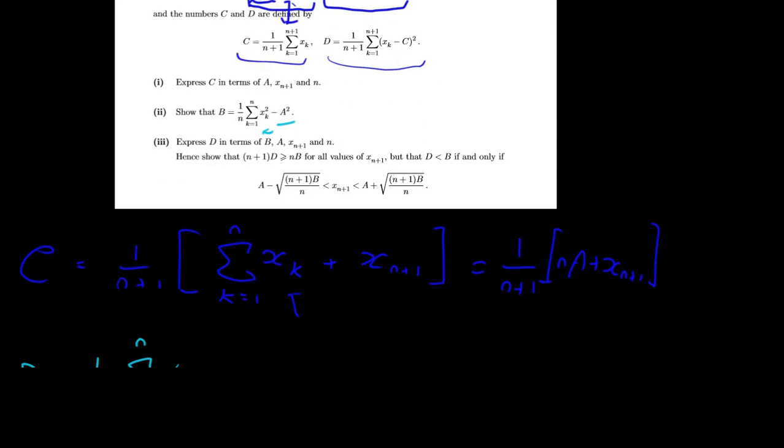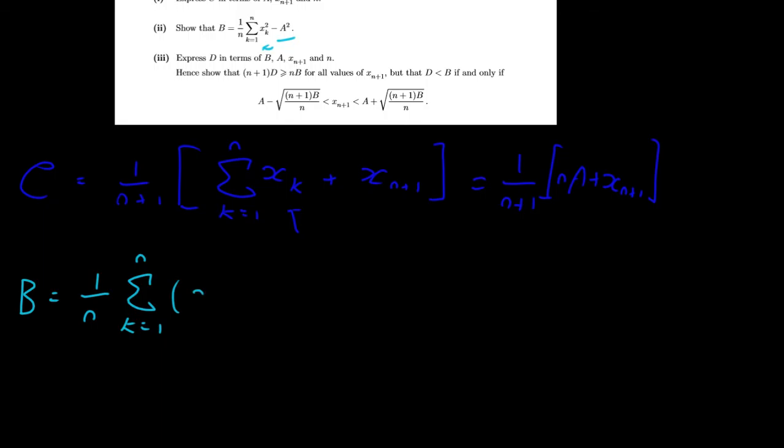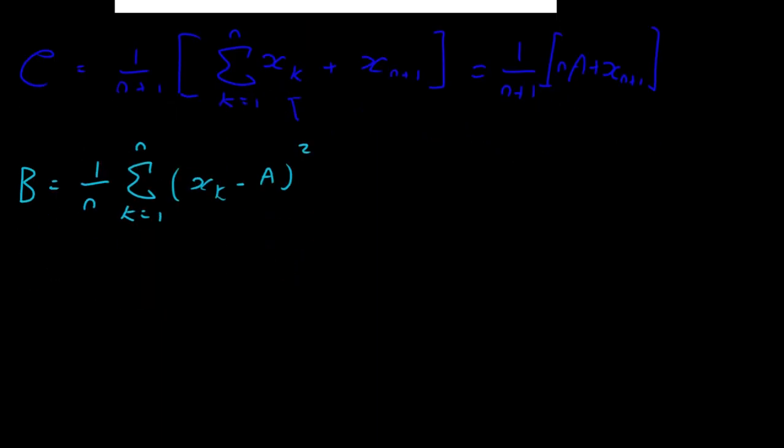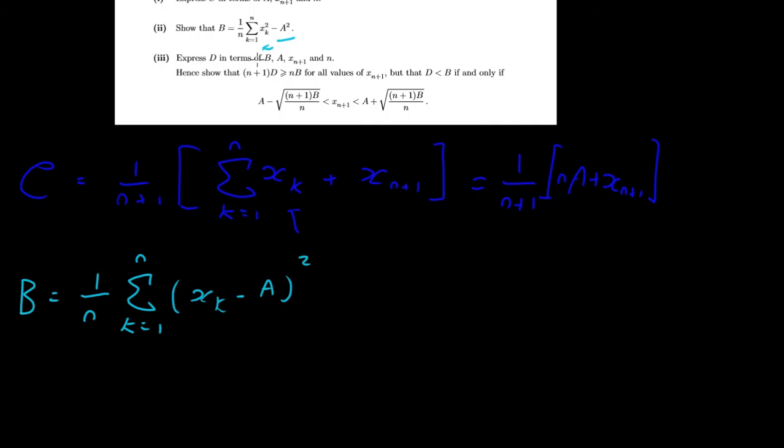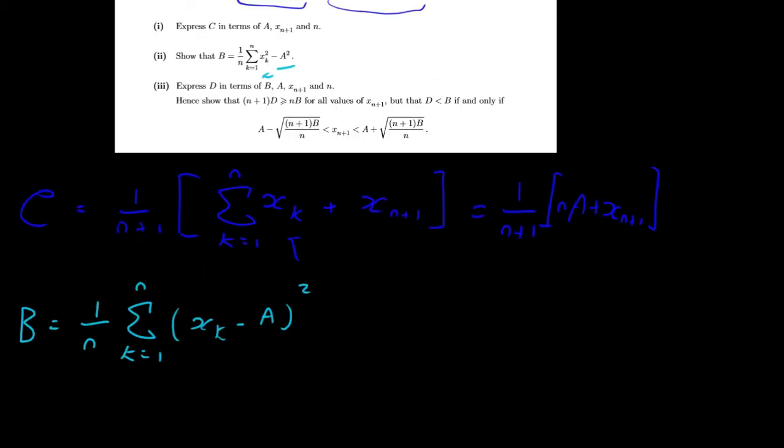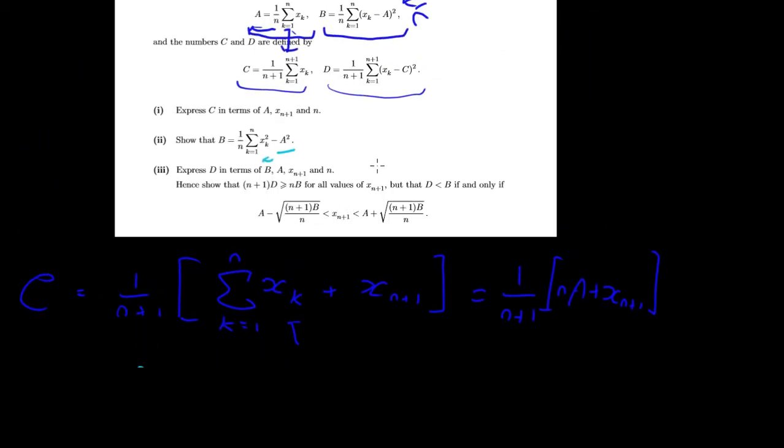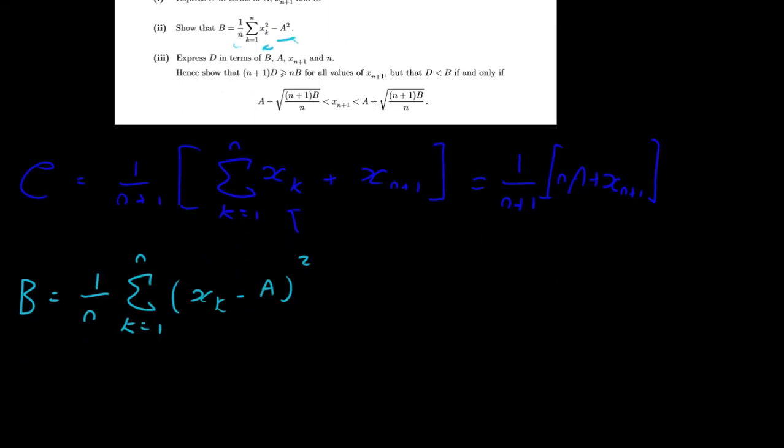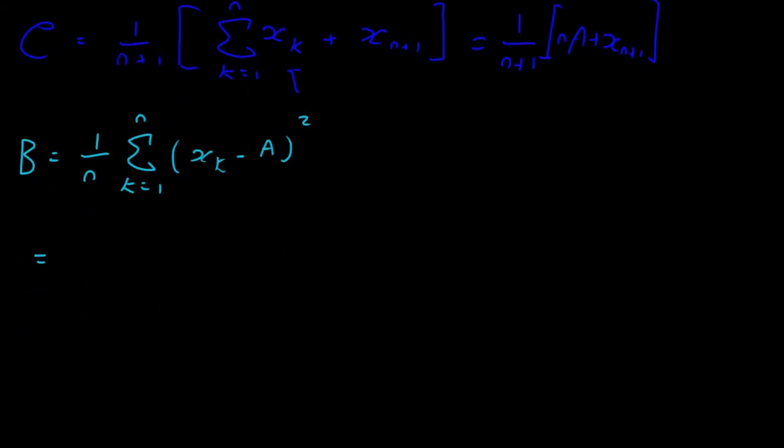So I believe it is 1 over n times, so we're given (xk - a) all squared. I don't know if you've ever worked with the variance before to show it was equivalent to some other expression, but this is exactly what we're doing here. If you notice, we're trying to show that it's just the sum of the squares over n minus the mean squared. You may have done that before in a stats module or something, but even if you haven't, it's okay. We can get to this pretty similarly.